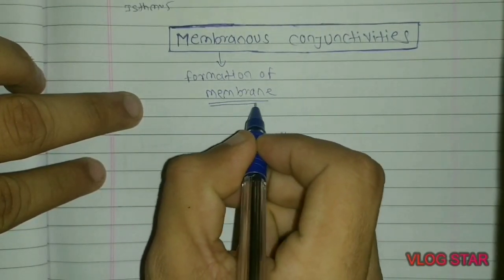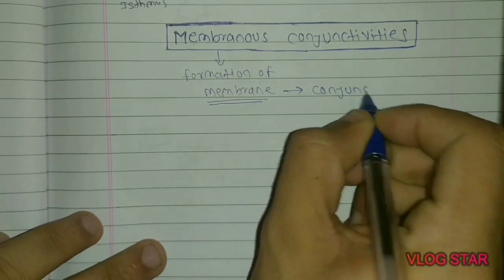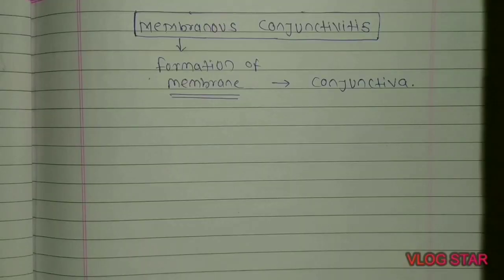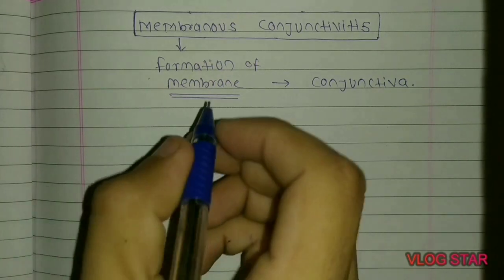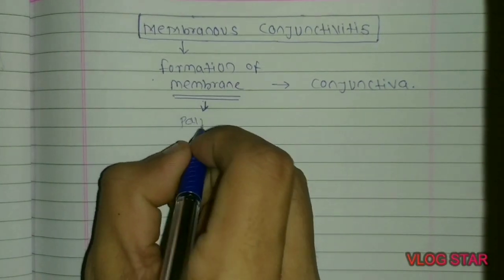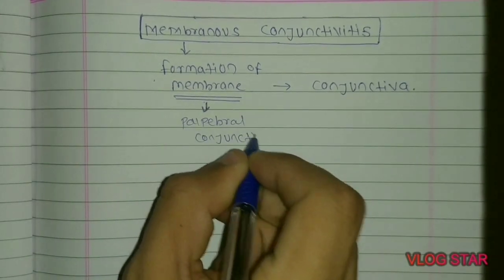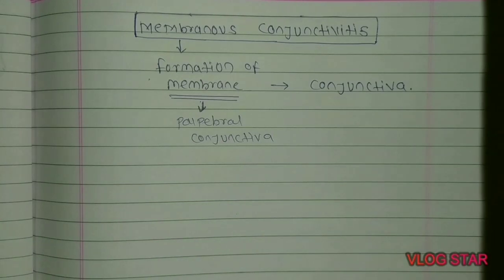The membrane gets formed on the conjunctiva. The question arises: on which conjunctiva does the membrane usually form? The palpebral conjunctiva is more likely to get infected, so the membrane most likely forms on the palpebral conjunctiva. In some rare cases, the bulbar conjunctiva also gets infected.